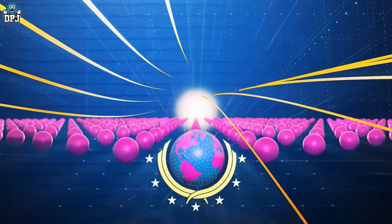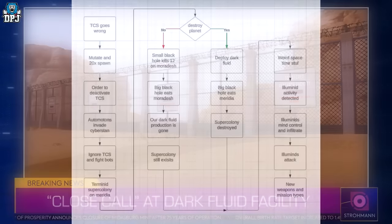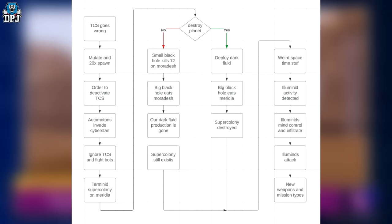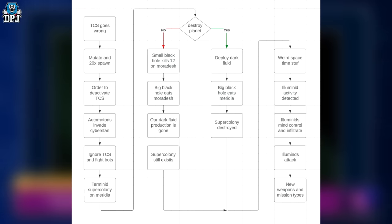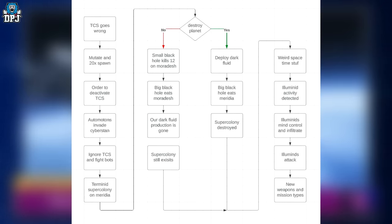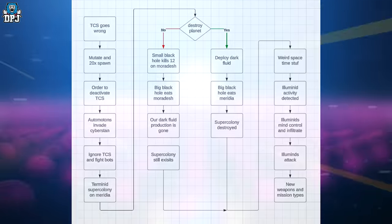Listening to these, we can see that the actual dark fluid facility is on Moradesh. If we go back to that timeline that predicted a lot of time, we can see where it states destroy planet, and if you go to no, it says small black hole kills 12 on Moradesh. That coincides with that video perfectly, and it says the big black hole eats Moradesh. But listening to the video, the third video, even after the incident, it does seem that the production of weaponized dark fluid will continue. That's why I believe there will be a third option here or another way this can go. Because back to that first video when we fail, when the galaxy is in mourning and the planet of Moradesh basically collapses into a singularity. So yeah, there's definitely three options here.